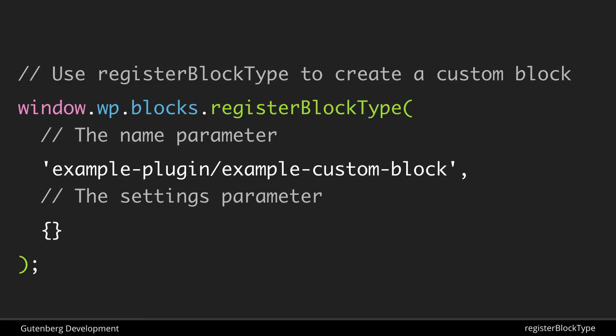The registerBlockType function takes two parameters. We see them broken up onto several lines here because the information we'll be feeding in is quite a lot, so it makes sense to put them on separate lines. The first parameter is a computer-readable name containing two parts: a namespace — for example 'example-plugin' — followed by a slash and then the actual name of the block itself. The second parameter is a settings object that takes a bunch of properties inside it.